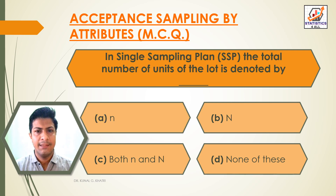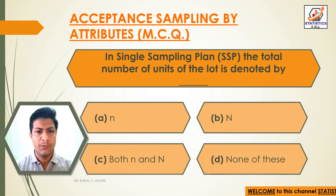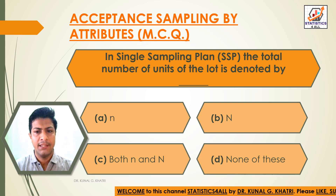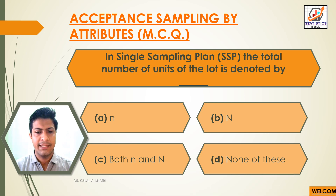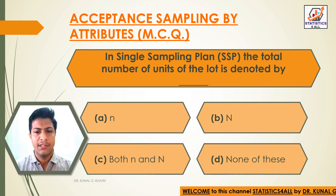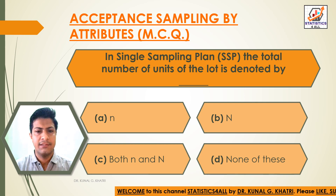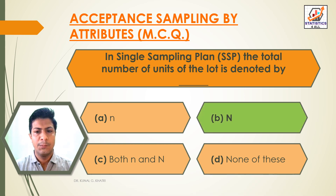Question 10: In a single sampling plan, the total number of units of the lot is denoted by — Option A: small letter n. Option B: capital letter N. Option C: both. Option D: none of these. The answer is Option B — capital letter N. In a single sampling plan, the total number of units of the lot is denoted by capital N.